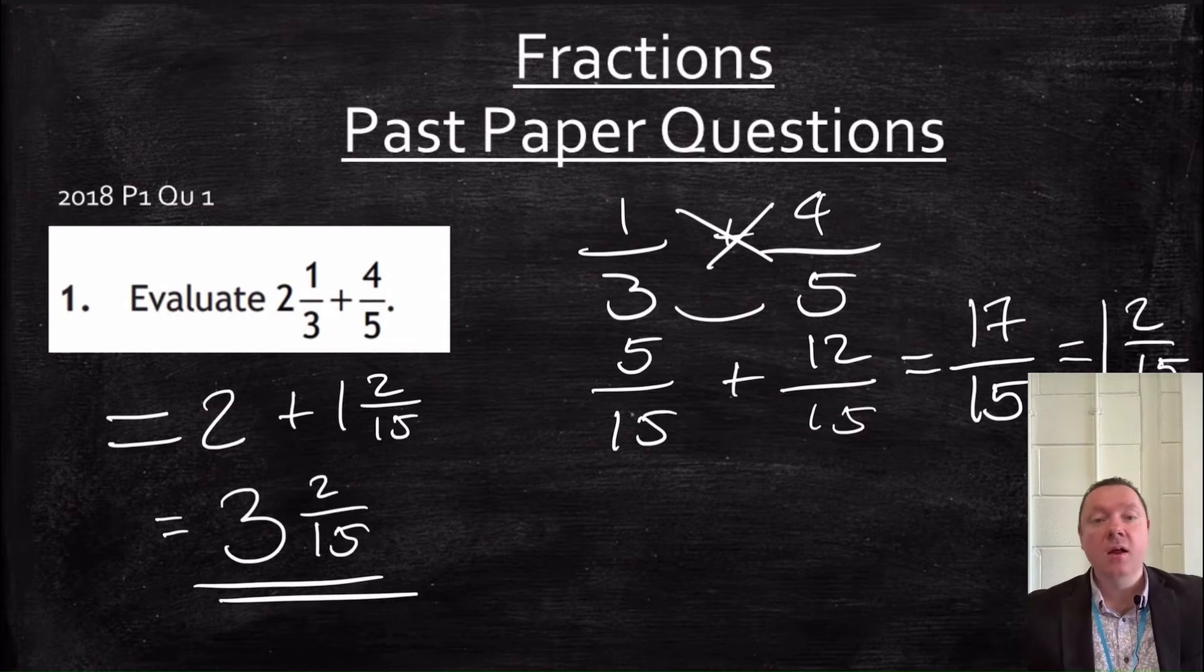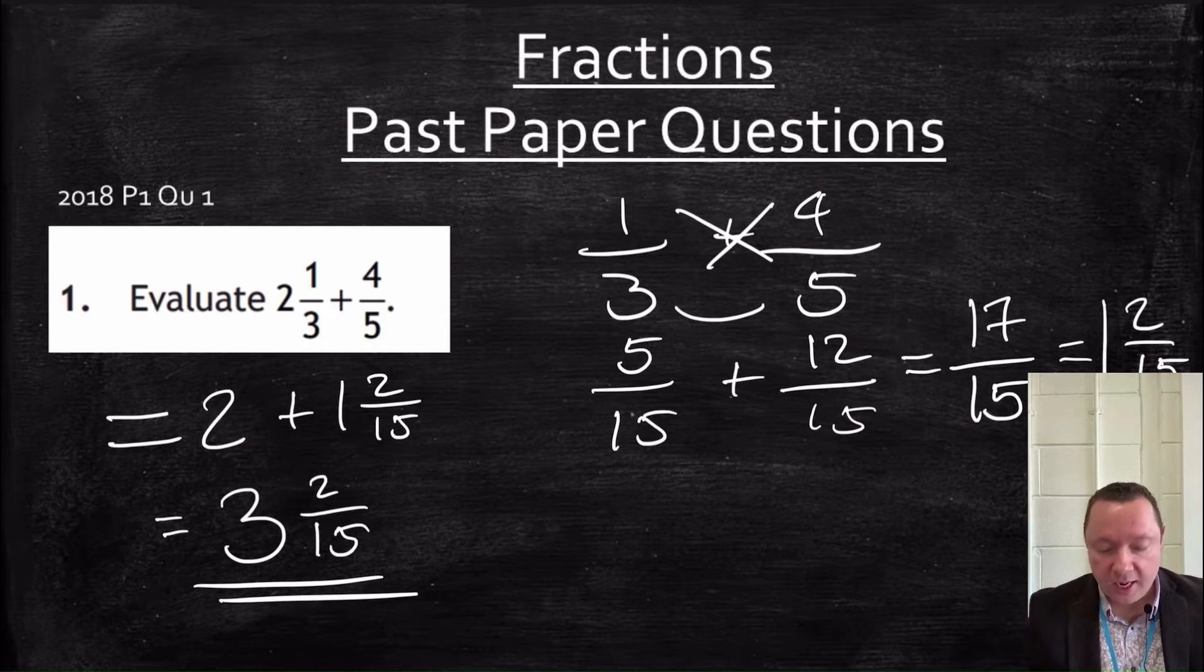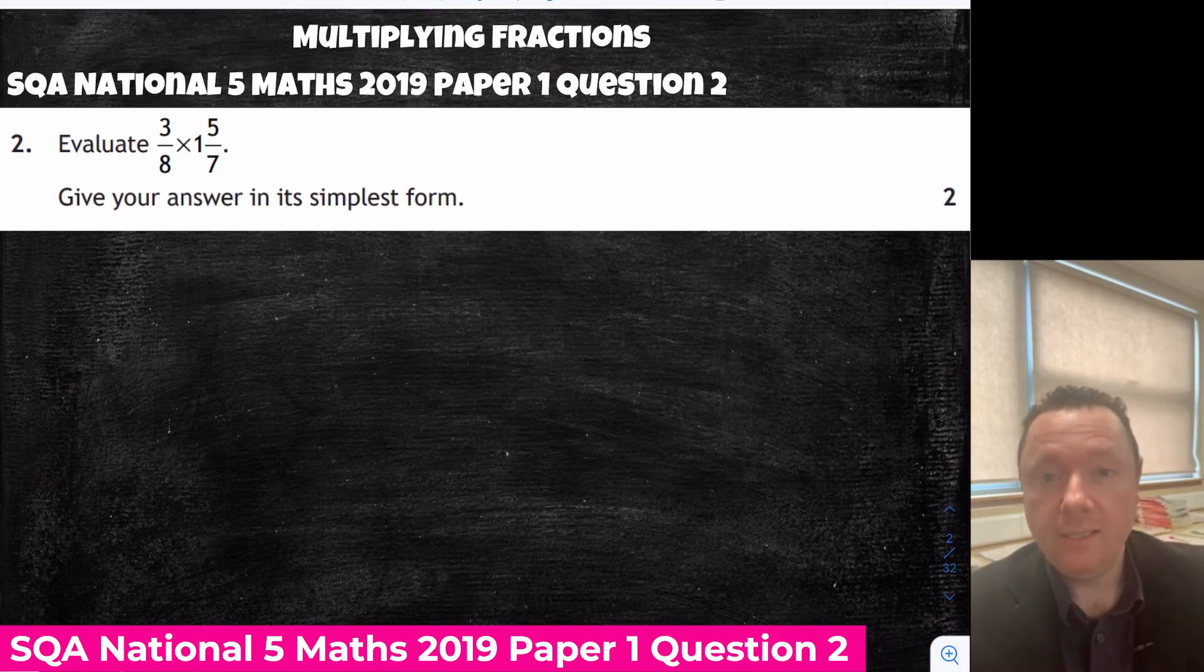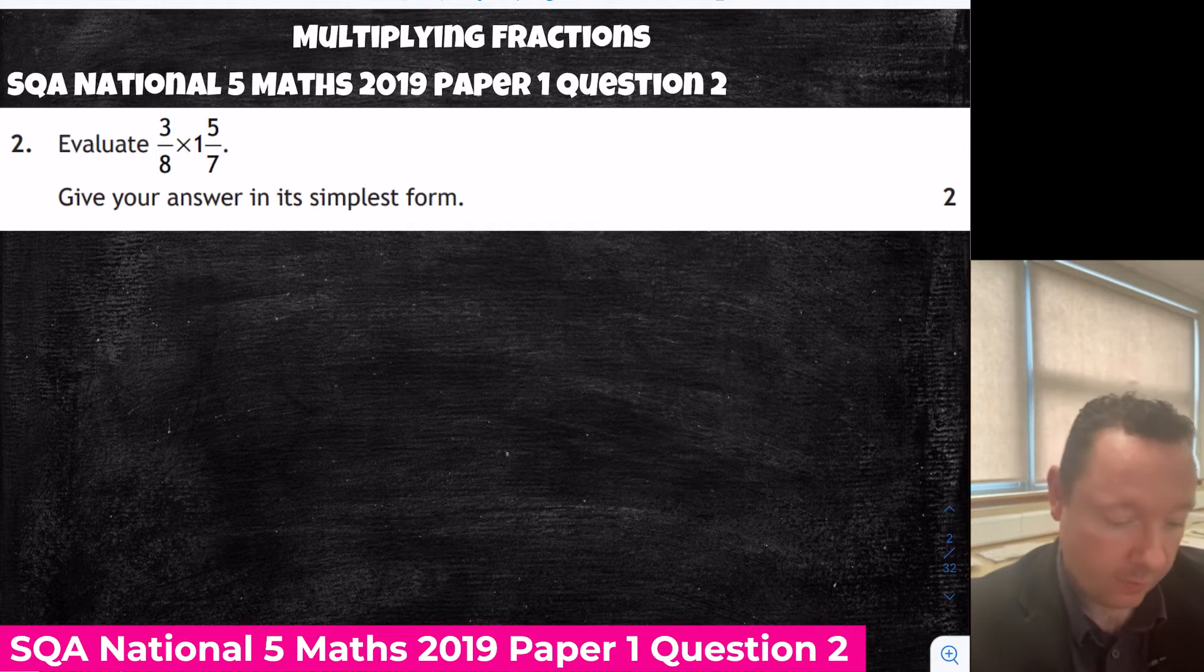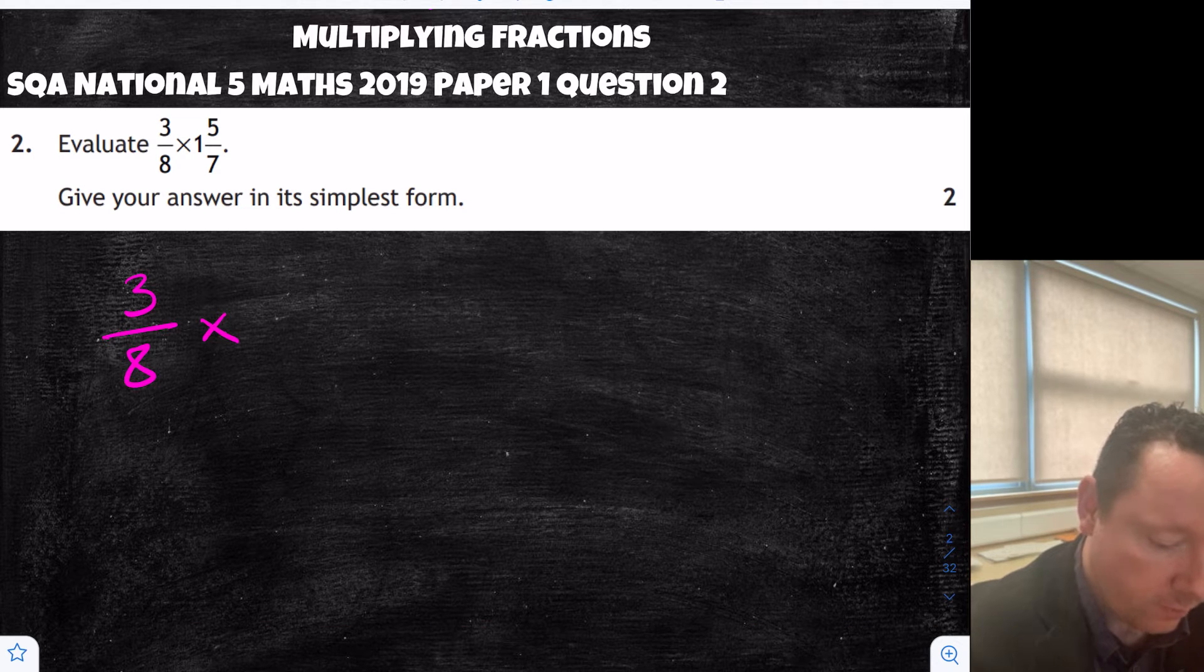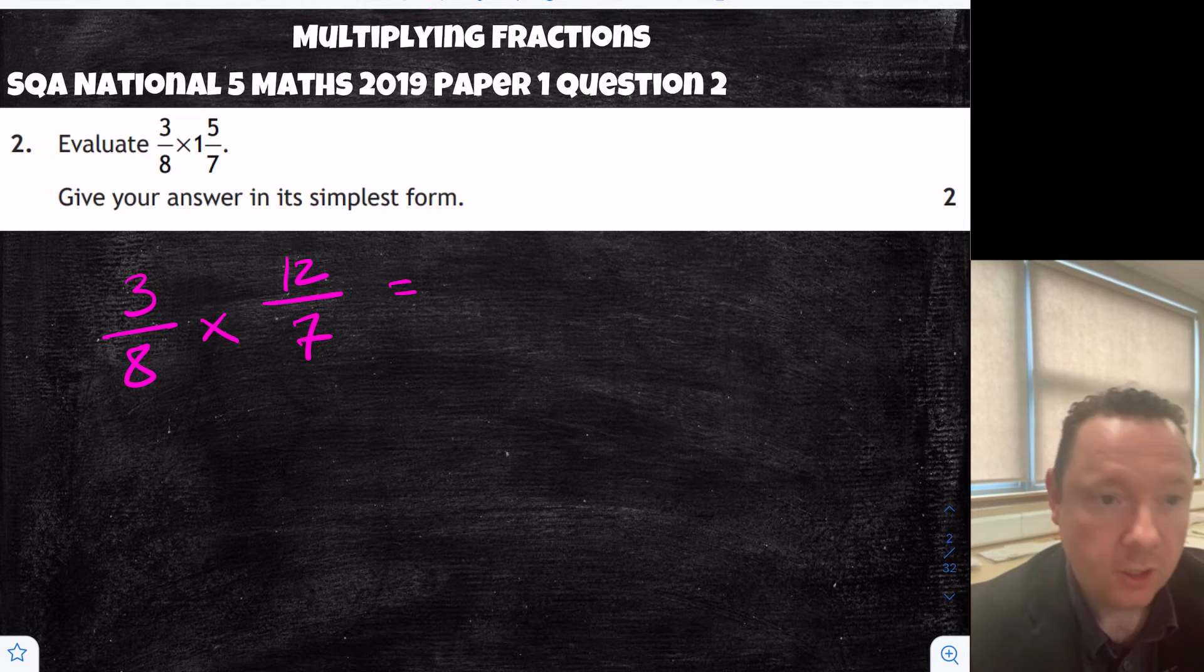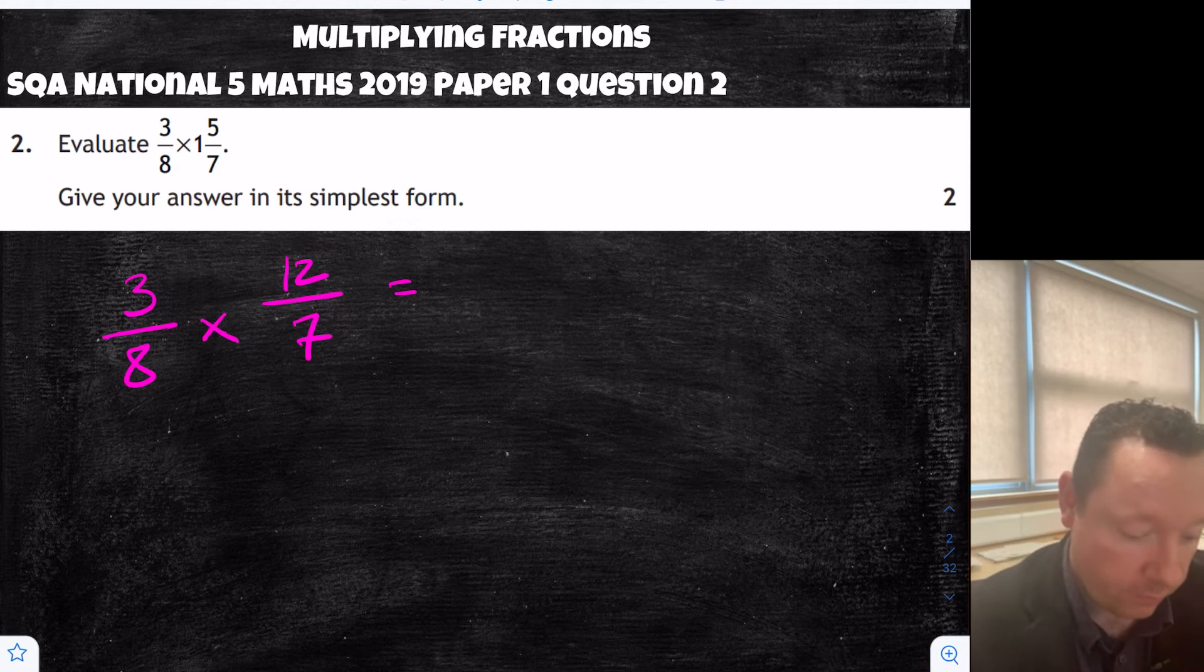So again, remember, the only way you could have done this question is to change the 2 and a third into an improper fraction and then added and simplified. This is the National 5 Maths 2019, paper 1, question 2. Multiplying fractions, 3 eighths times 1 and 5 sevenths. So we've got 3 eighths times 1 and 5 sevenths. 1 times 7 is 7 plus 5 is 12. So that's 12 over 7. Now at this point, you could either simplify now or simplify when you're finished. I'm just going to simplify when I'm finished.